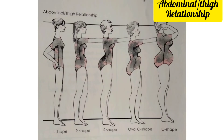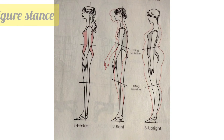Next up is the abdominal and thigh relationship. The first model in the picture shows the abdomen in relationship with the thigh has an eye shape. The second model has a pear shape, the third model has an S shape, the fourth model has an oval shape, and finally the fifth model has an O shape.